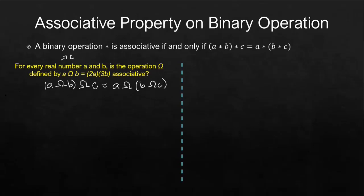This should be equal to A omega B omega C. Let's start with the left side. We have A omega B omega C. Let's start with this part. A omega B is 2 times the first number which is A, and then 3B, 3 times the second number. This will be related using omega C. But before actually relating it, we simplify this first. 2A times 3B. 2 times 3 is 6. A times B is AB. This will now be the first term for 6AB omega C.